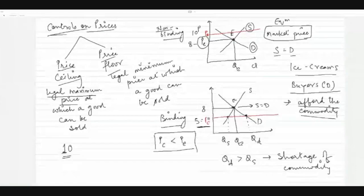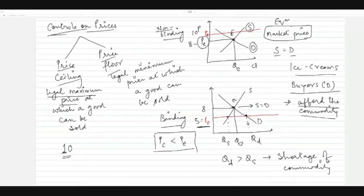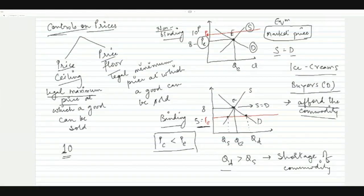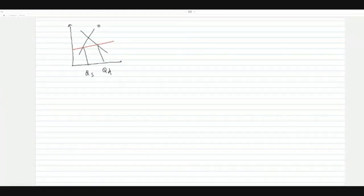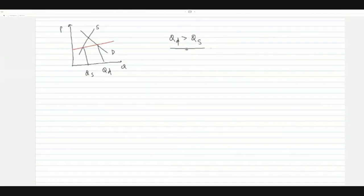When the price becomes rupees 5, more people want to buy this commodity than there are people willing to sell it at that price. This means buyers become many and sellers become few, creating a shortage or excess demand in the market. We observe that quantity demanded is greater than quantity supplied.